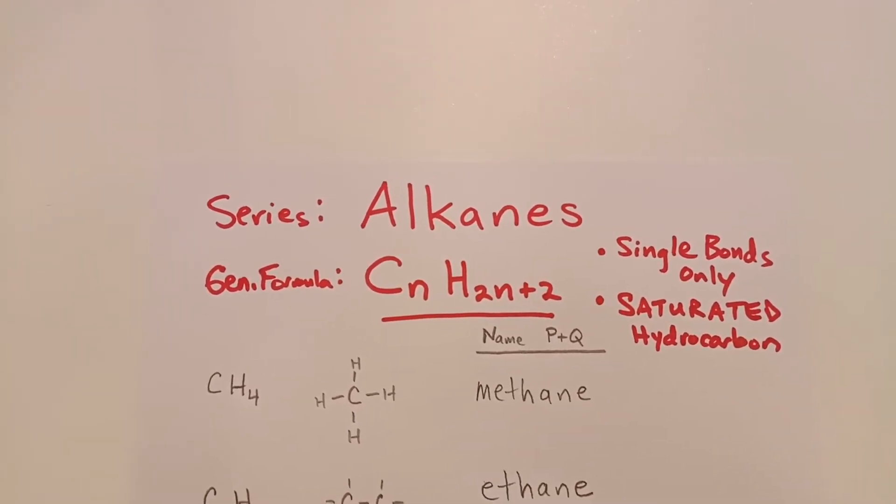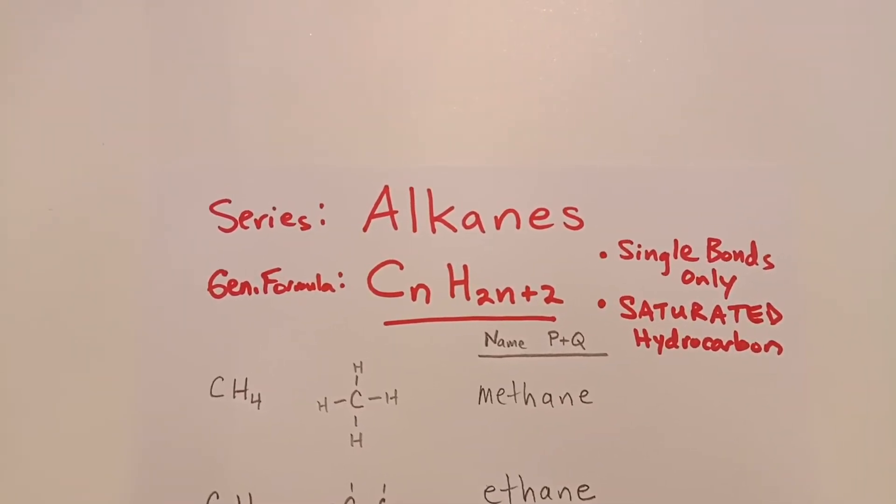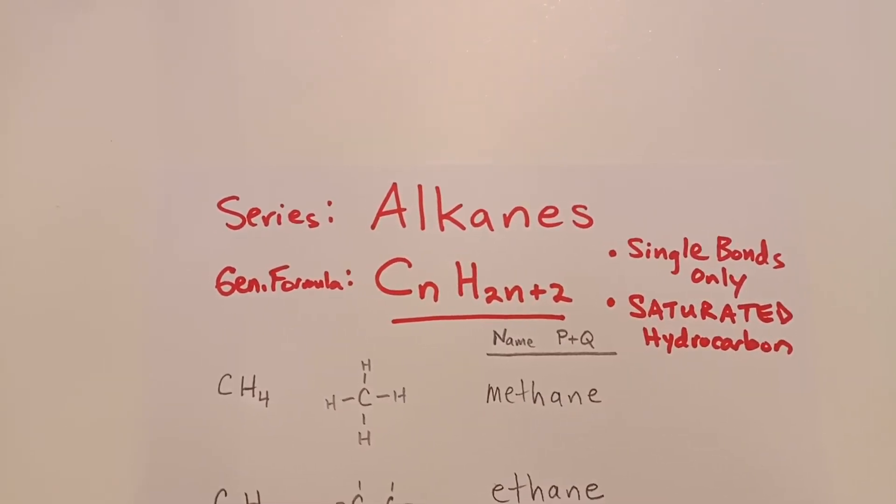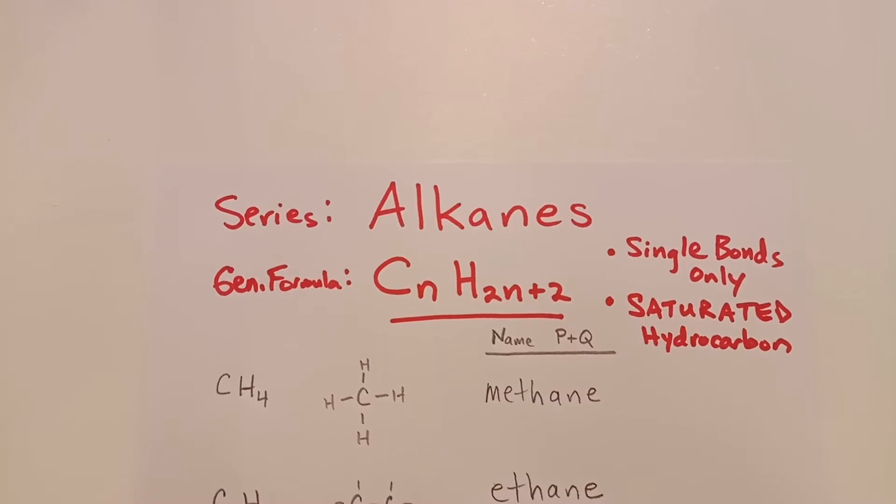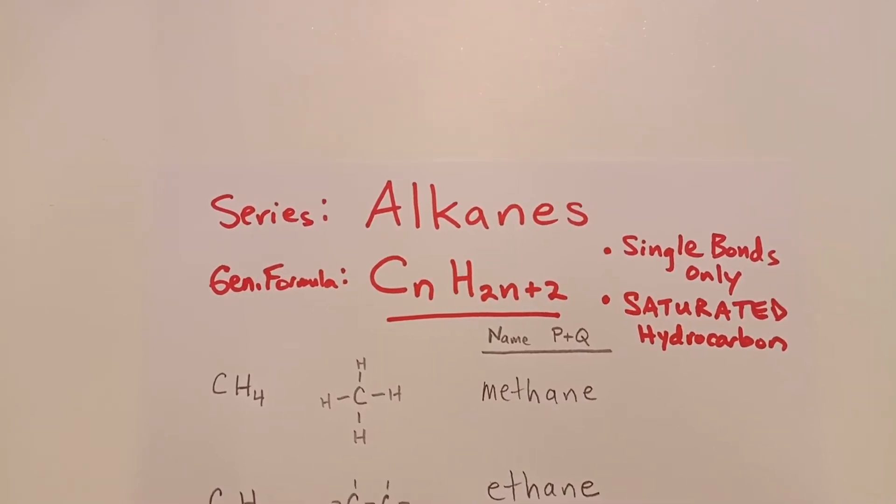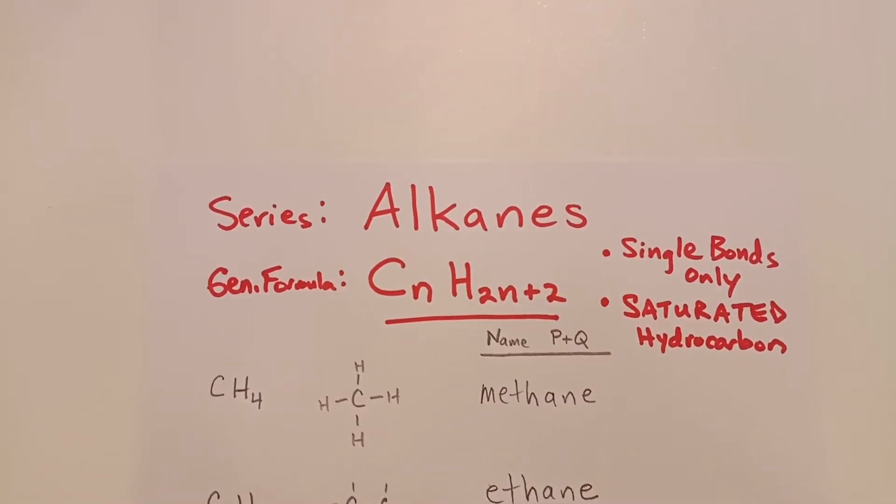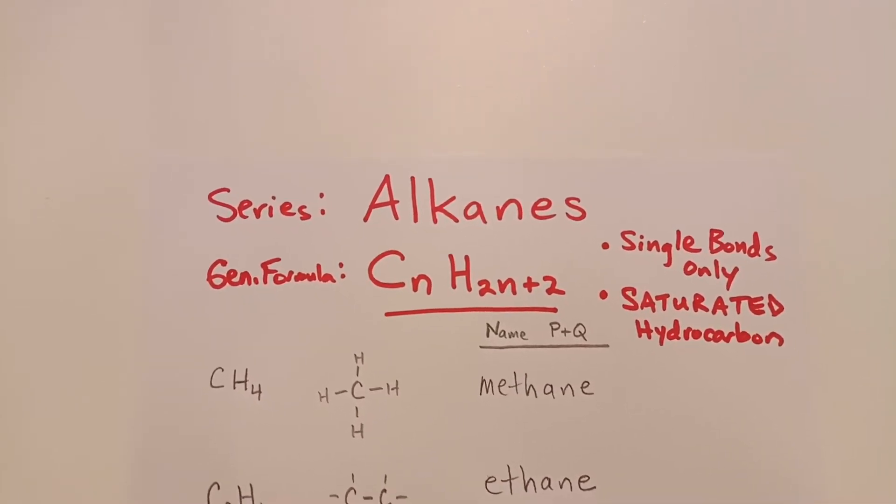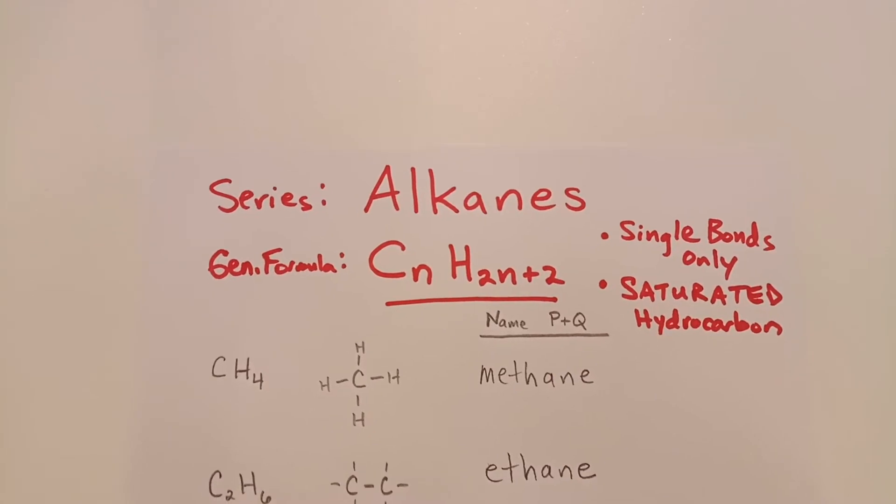First is methane. Meth is the prefix you get from reference table P. If you look at reference table Q, you'll find that this is an alkane, all single bonds, and has the right general formula. Therefore, it should have the A-N-E ending. All alkanes end in A-N-E, like methane. Methane is one of the simplest hydrocarbons. It's a big component of natural gas from swamps.